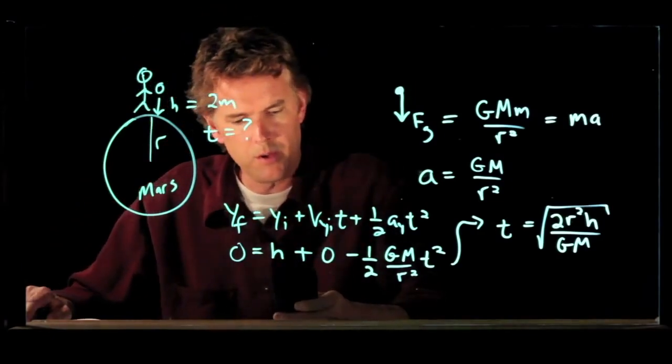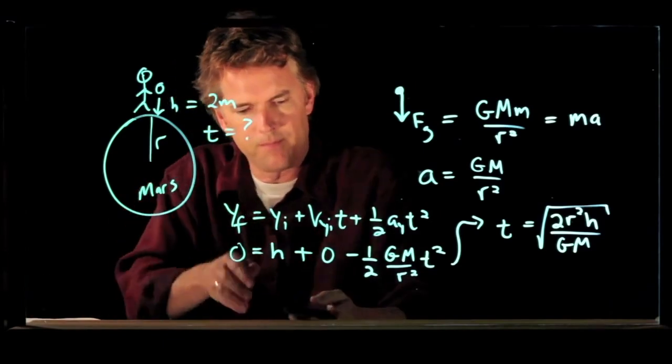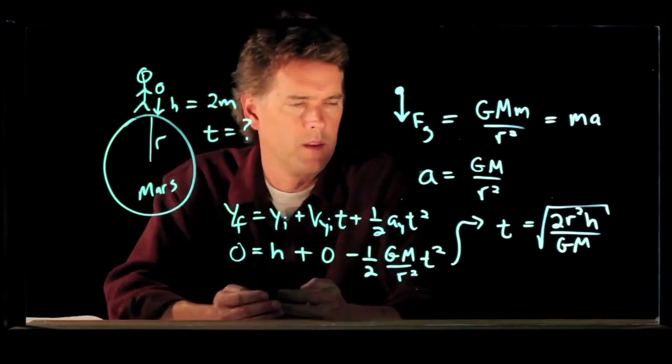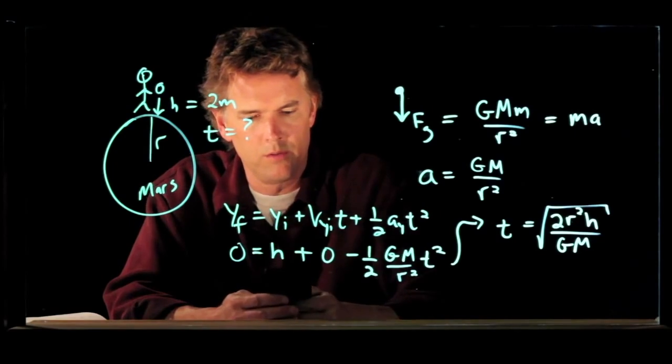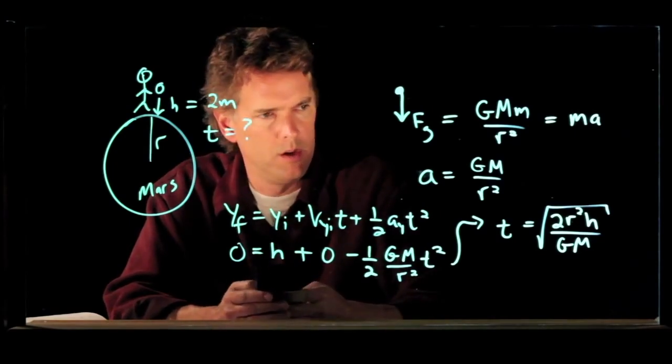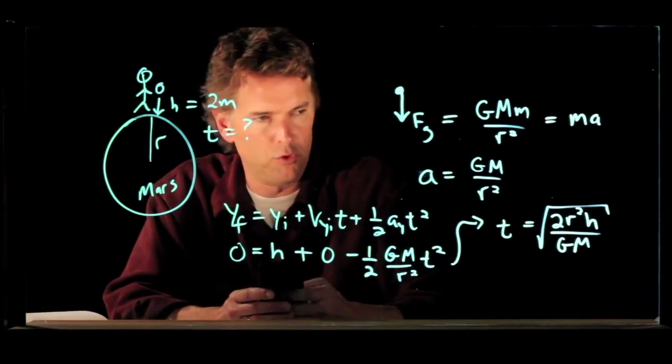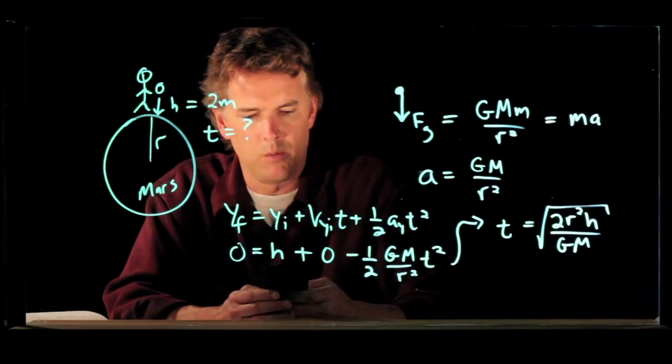So we've got 3.37 times 10 to the 6. We're going to square that. We're going to multiply by 2. We're going to multiply by the height, which we also said was 2 meters.